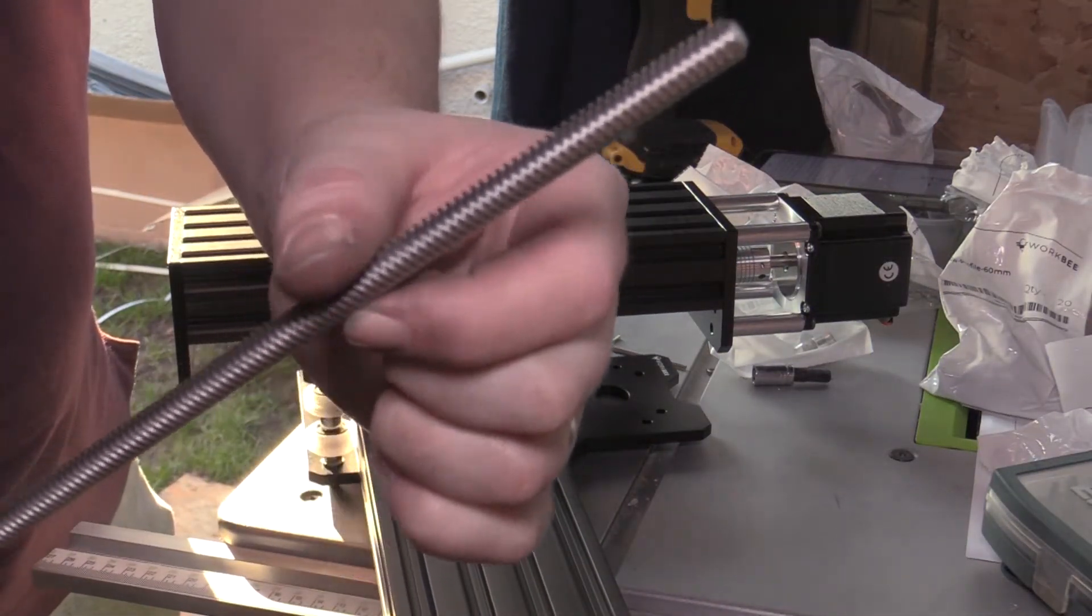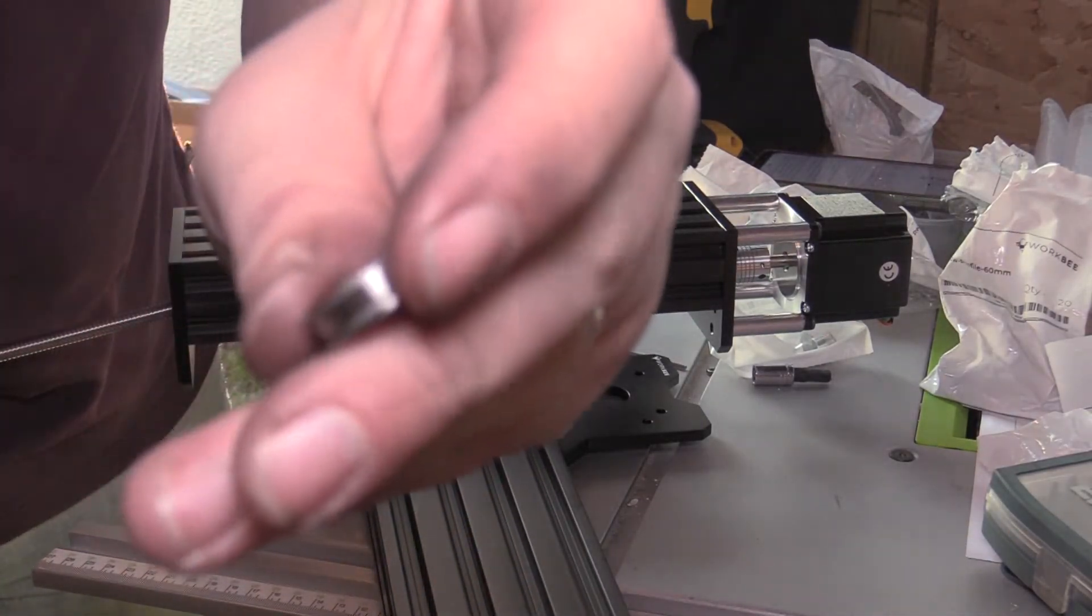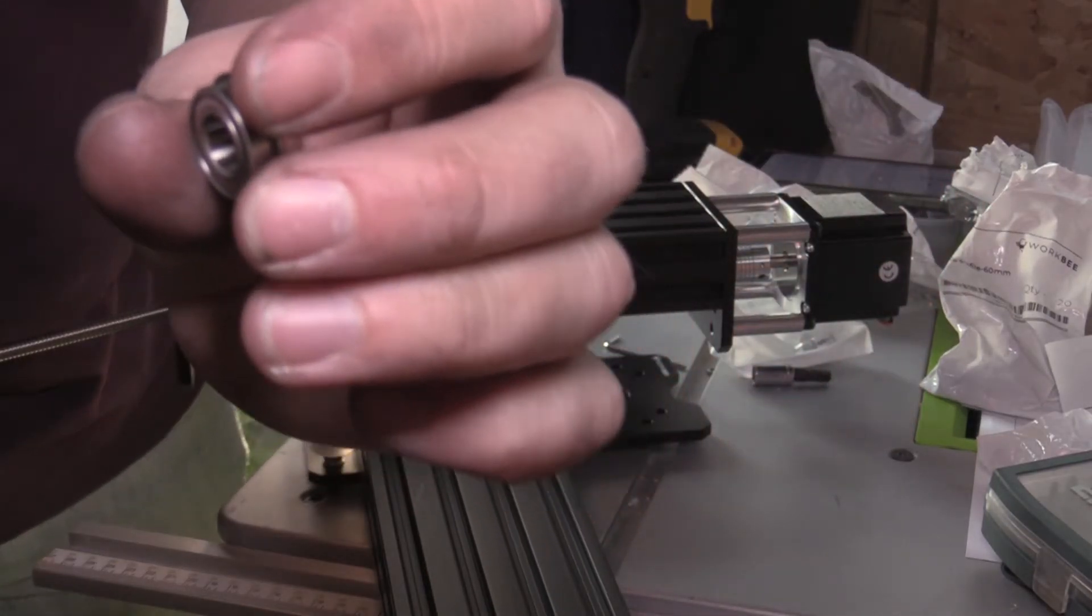Next thing I'm going to do is put this Acme thread in the bottom of here. But as I fit it, there's a bearing that needs to slide over the Acme thread, so I'm going to do that.